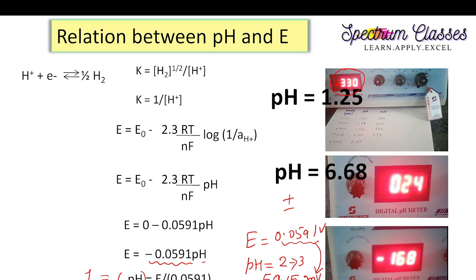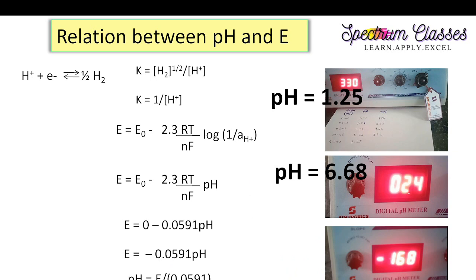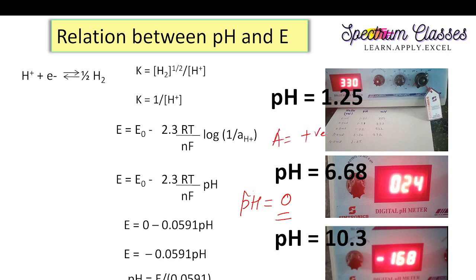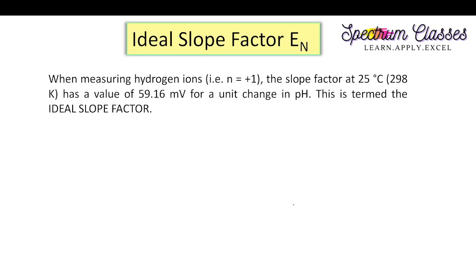At pH 6.68, the potential is 0 to 4 millivolts, still positive. At pH 10.3 the value is minus 168 mV. So the inference is: at pH 7 the electrode potential is 0; for acidic values the potential is positive, and for basic values it is negative.